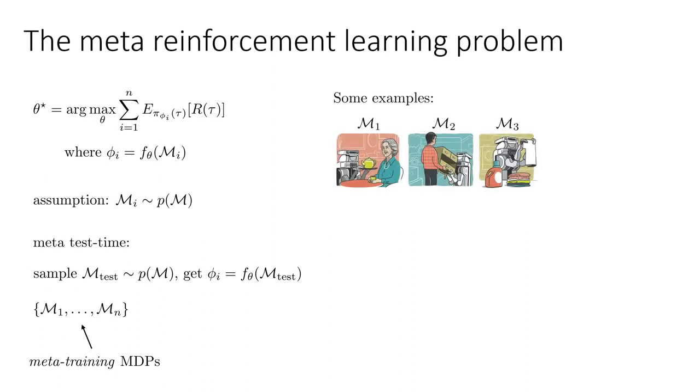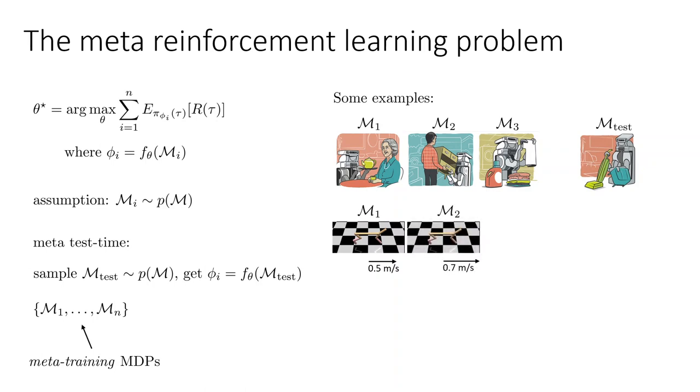For example, the different MDPs might correspond to a robot doing different tasks, and then M_test would be the robot learning a new task. Or it might be something much simpler, maybe it involves the half cheetah robot from your homework running at different speeds forward and backward, and then M_test would be a new speed.